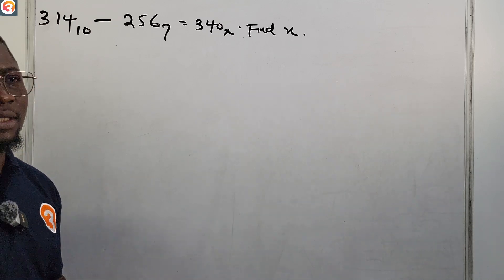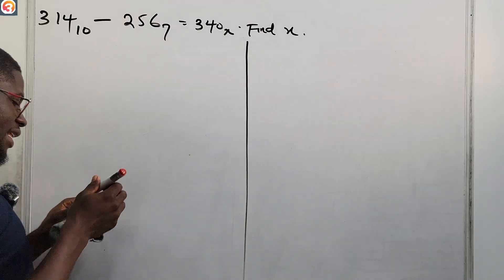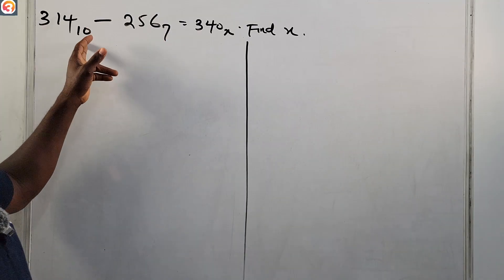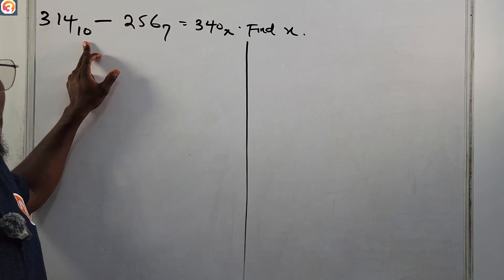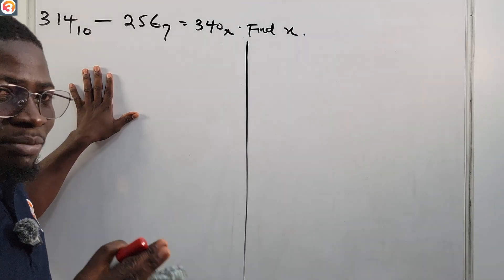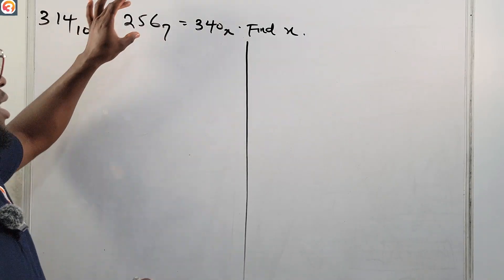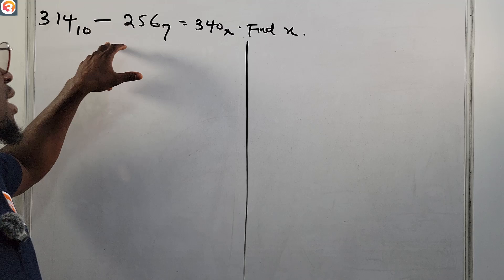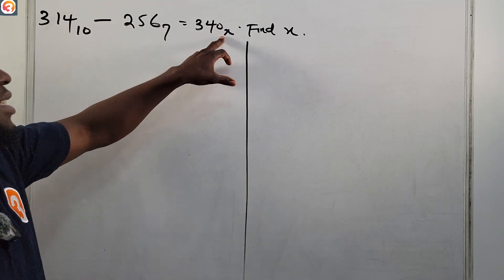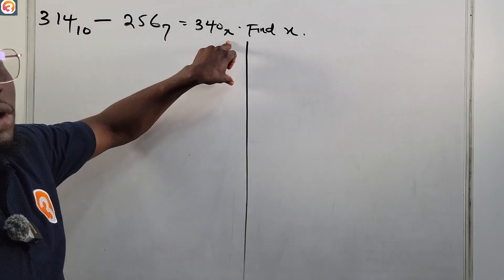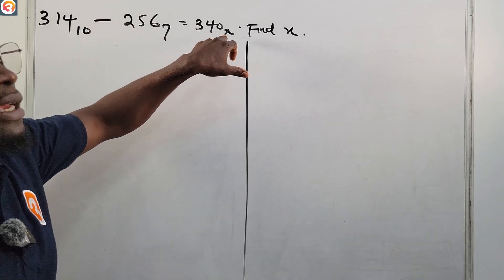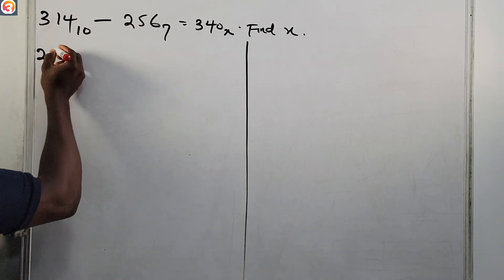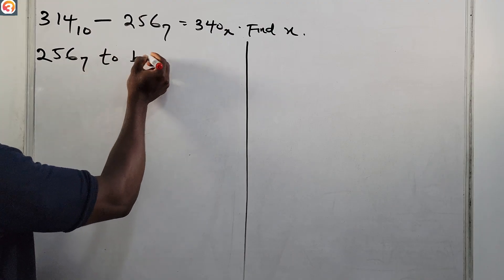Let's solve. From the left hand side, as you can see, we cannot subtract 256 base 7 from 314 base 10. Base 10 is the natural base — all numbers you see without a base are in base 10. This one is in base 7, so we need to convert 256 base 7 to base 10 first before we can subtract it from 314 base 10. Also, 340 base x — the x is a base — so we need to convert 340 base x to base 10 before we can proceed.